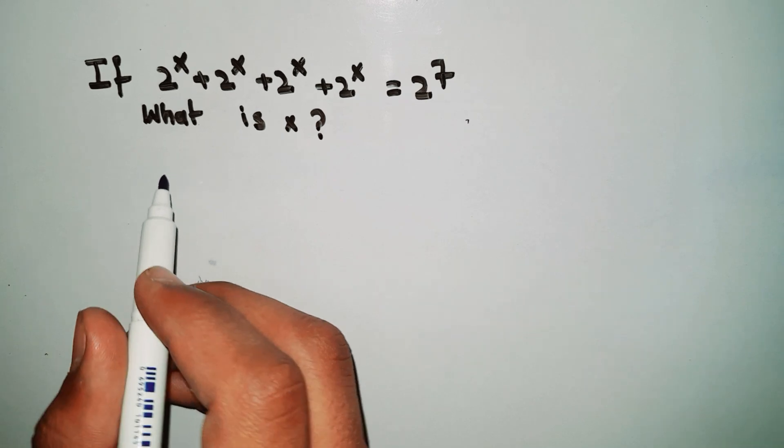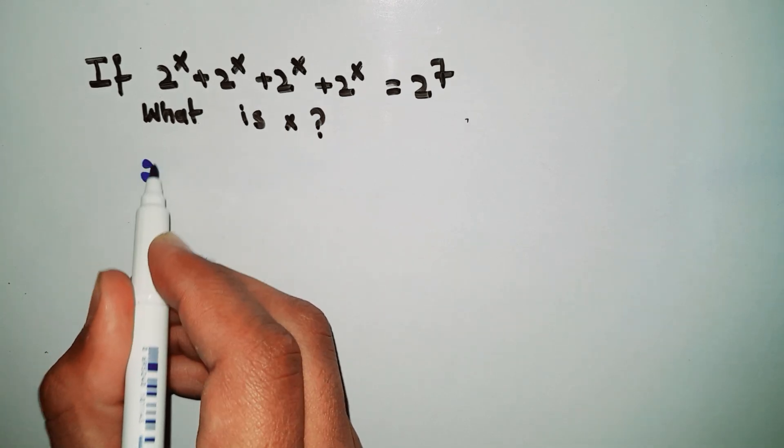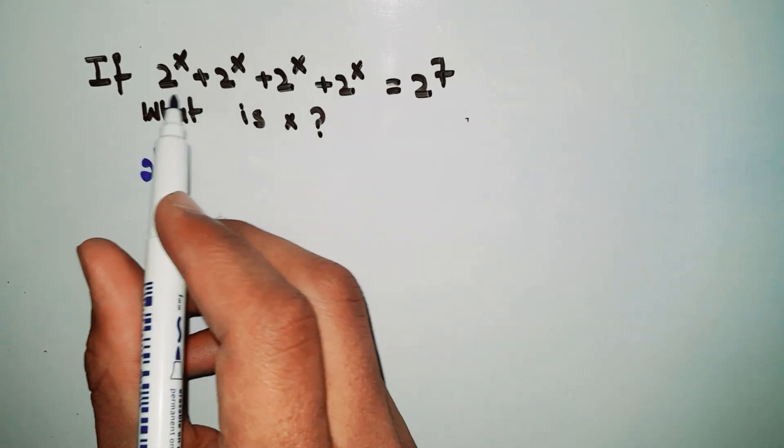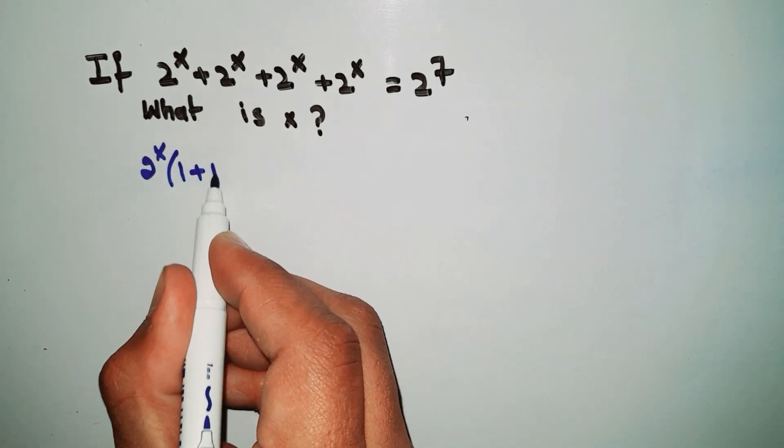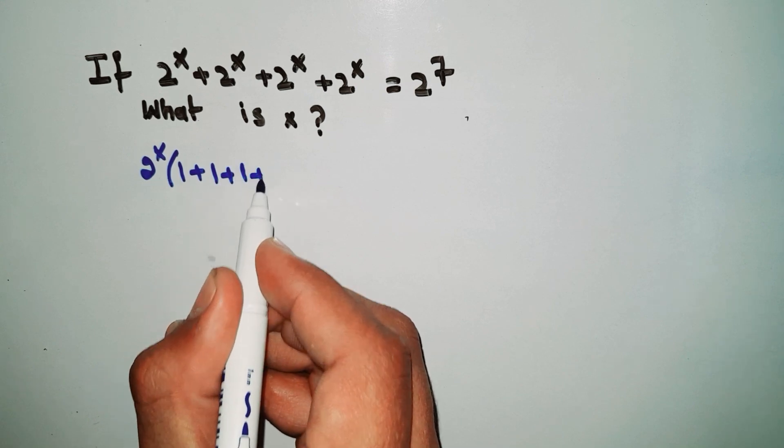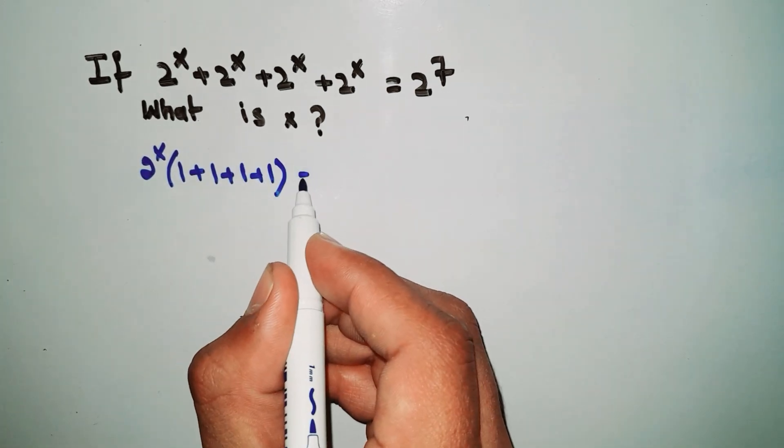So first of all, we write 2^x. We know that 2^x is common, so we write 2^x as a common factor. Then the remaining terms are 1 + 1 + 1 + 1 in brackets, which equals...